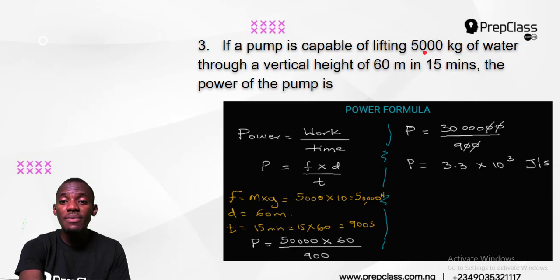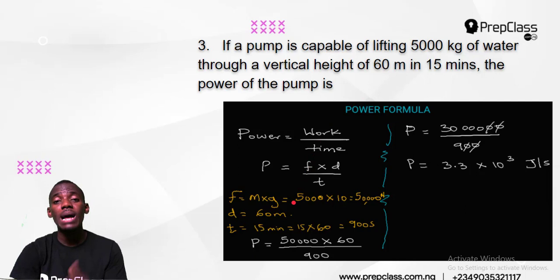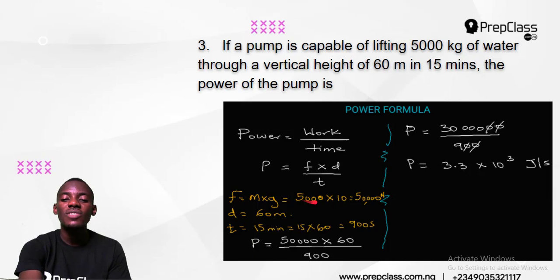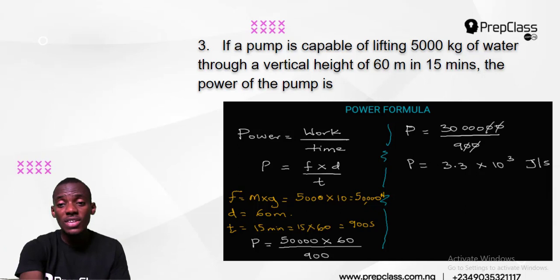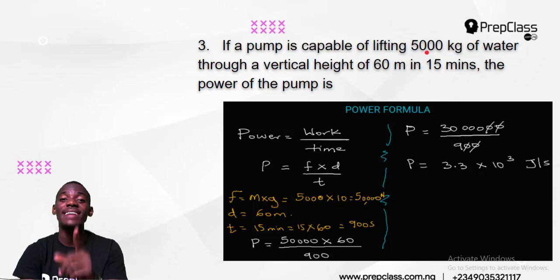You must change mass into force by multiplying by 10. Force equals mass times acceleration due to gravity. The mass is 5,000, gravity is 10, giving 50,000 newtons. Mass changes into force by multiplying by 10 — that 10 is G, acceleration due to gravity. So the force is 50,000 newtons. The distance is 60 meters.